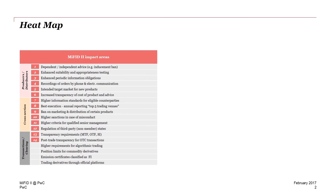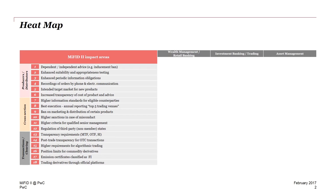But let's get back to the heatmap. Here you can see an example of such a heatmap containing 18 topics. You need to fill the heatmap by determining the impact of MiFID 2 regulation across the business divisions, for example wealth management and retail banking, investment banking, and asset management.